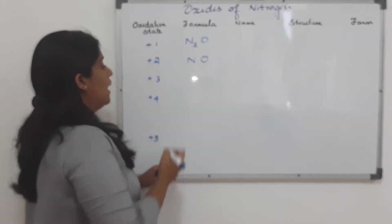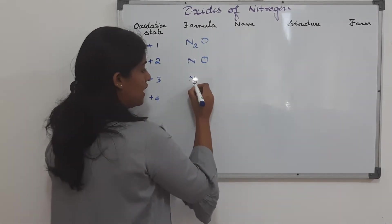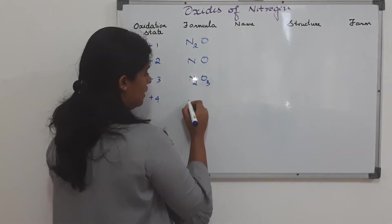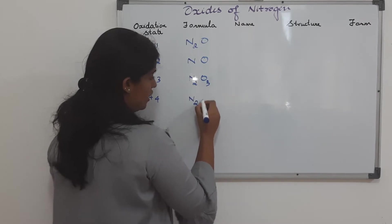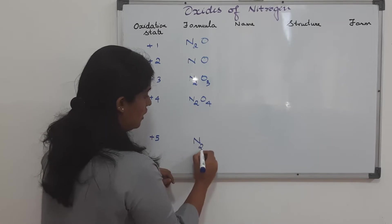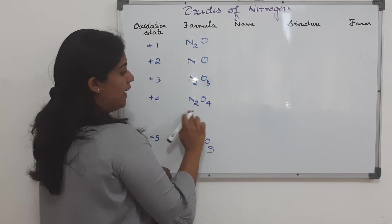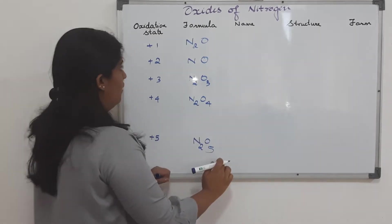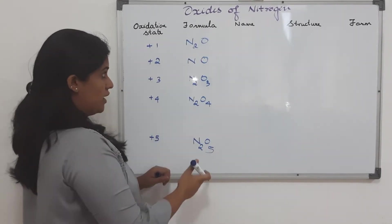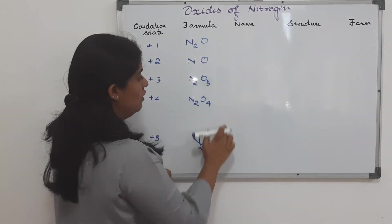And then onwards it is like N2O3, N2O4 and finally N2O5. Easy to remember, easy to write. Only thing is plus 2 is NO. Apart from that, the others all follow a pattern.